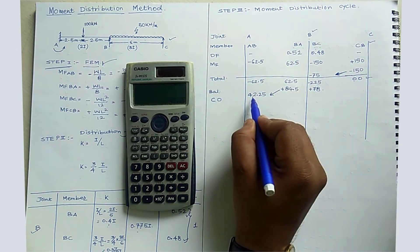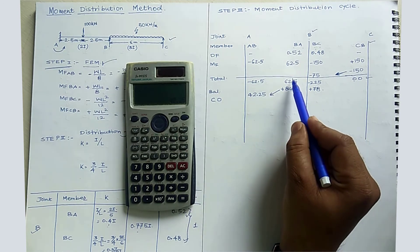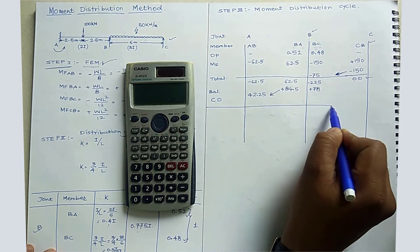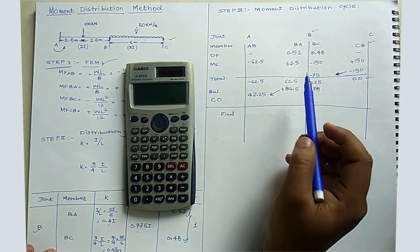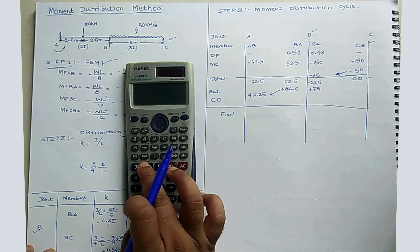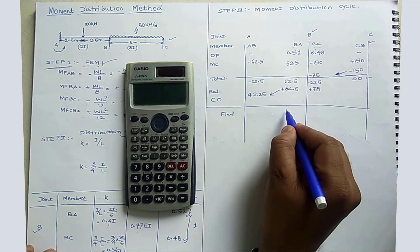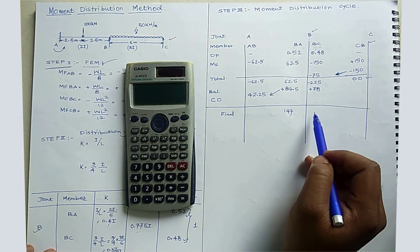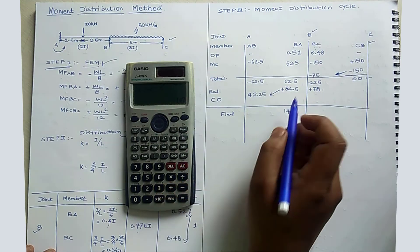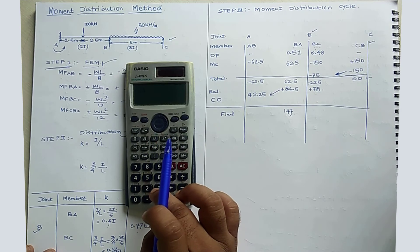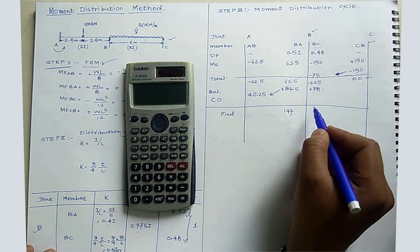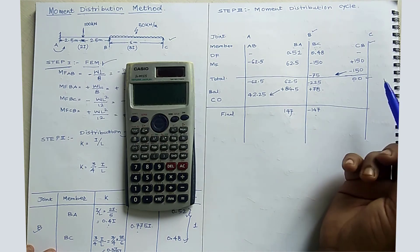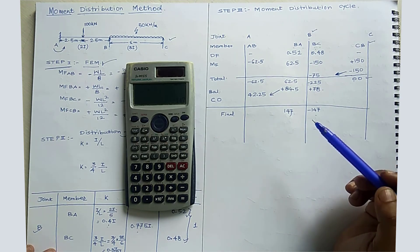After balancing and carry-over, we sum all values. For BA: 62.5 + 84.5 = 147 kNm. For BC: −150 + (−75) + 78 = −147 kNm. The sum of moments at joint B = 147 + (−147) = 0, which satisfies the equilibrium condition. The joint is now balanced.